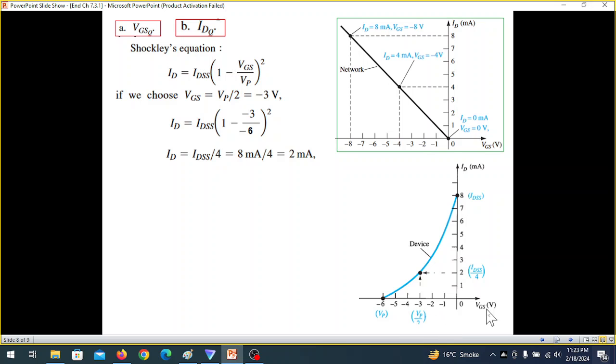And similarly, if you take VG is equal to VP, that is minus 6, you get another set of values where IG is 0. And here we are just talking of this. If you are taking VP by 2, VP by 2 is minus 3. Putting here, VP is minus 6. And solving, we get ID is 2 milliampere. So 2 milliampere, where VG is minus 3. So this is the third point. So this graph, we have plotted the device graph.